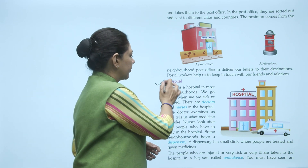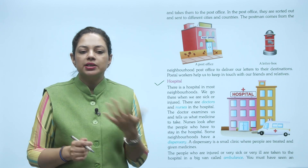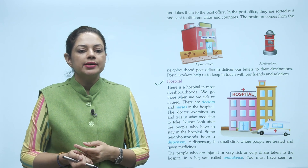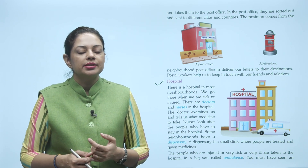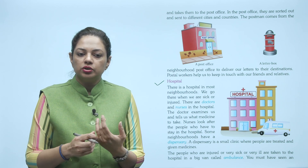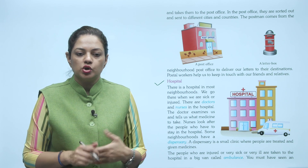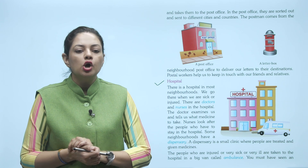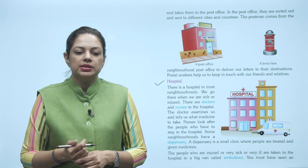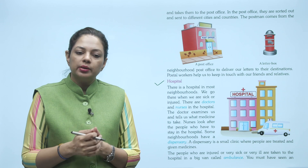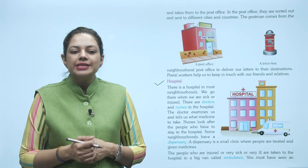Next is hospital. There is a hospital in most neighborhoods. Zyada tar neighborhoods mein hospital bhi hota hai. We go there when we are sick and injured — jab hamein chot lag jaati hai ya hum bimaar hote hain, toh hospital jaate hain. There are doctors and nurses in the hospital. Doctor hamaari examine karta hai, check up karta hai, aur hameein bataata hai hameein kaun si dawaaiyaan ki zaroorat hai. Nurses look after the people who have to stay in the hospital — jo zyada bimaar hote hain unhe hospital mein admit kar lete hain, unki dekhbhal ke liye nurses hoti hain.